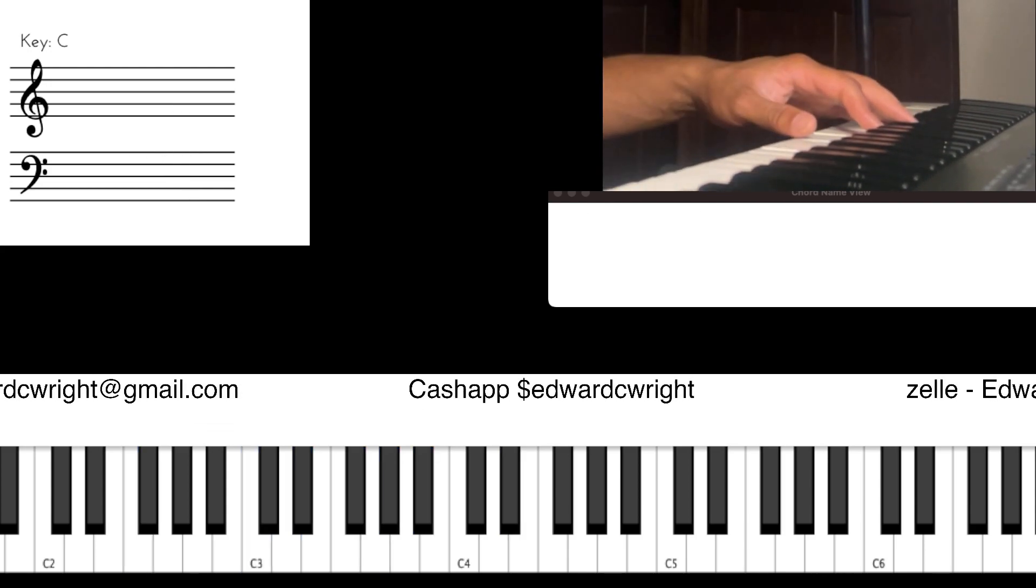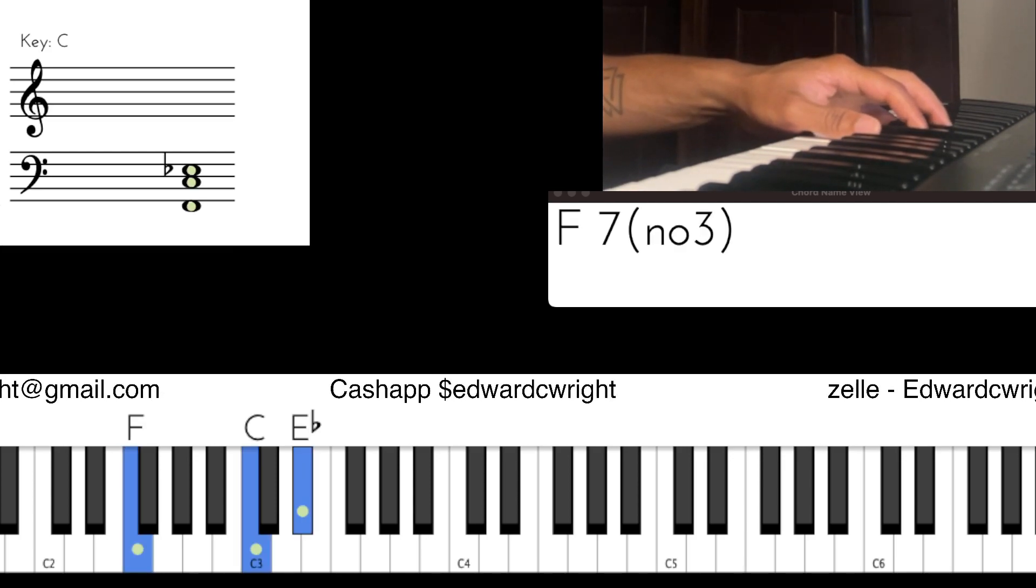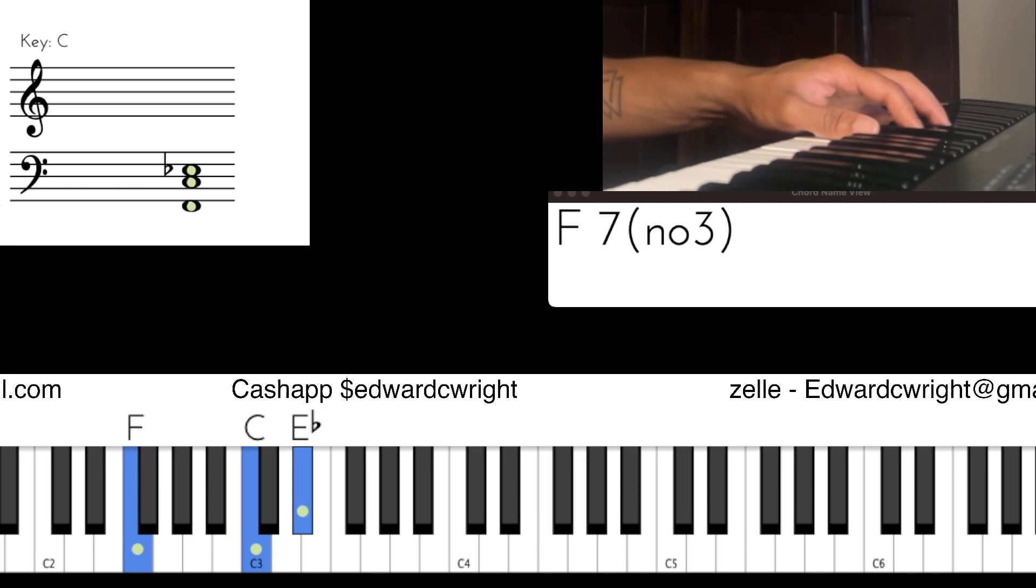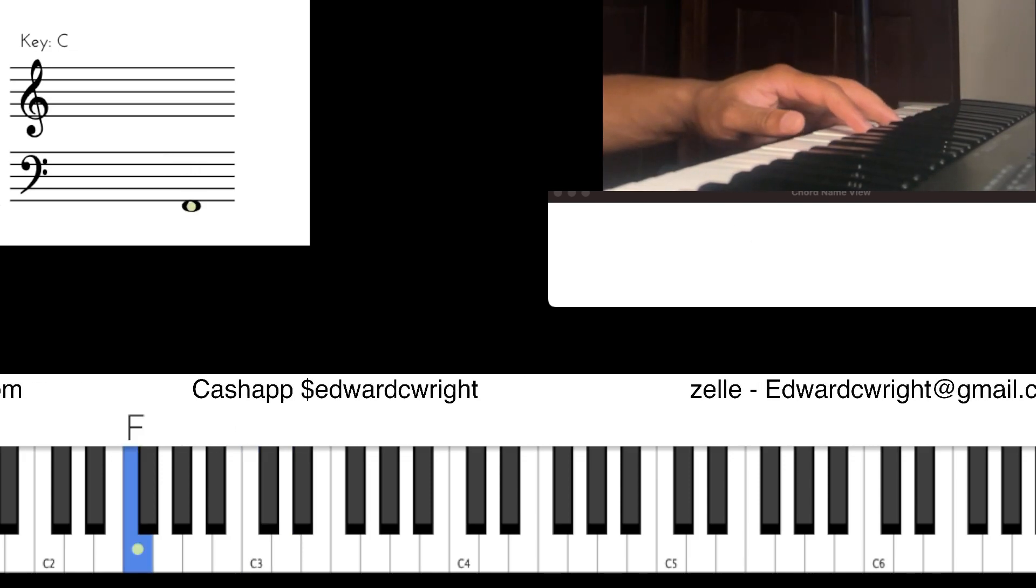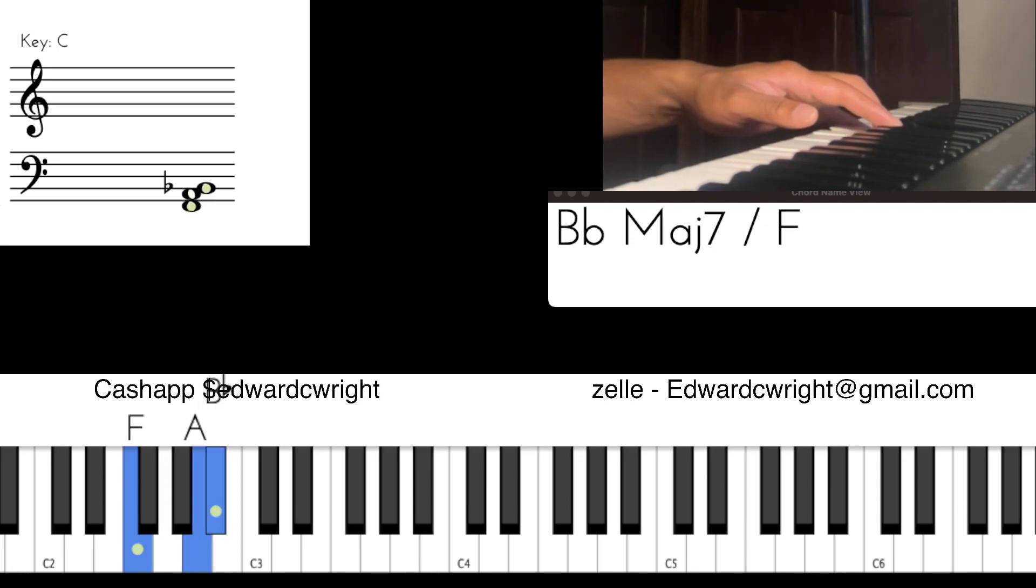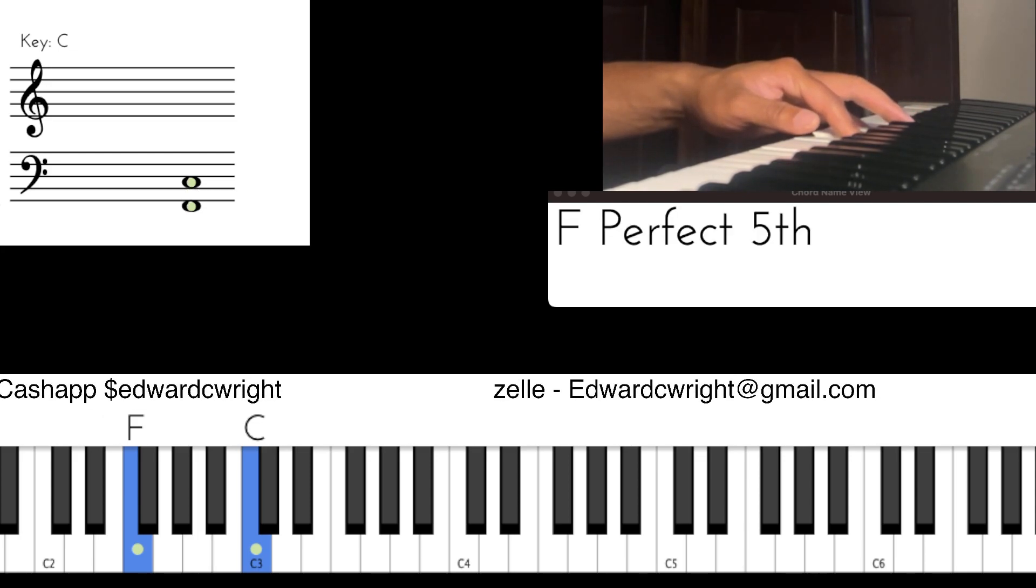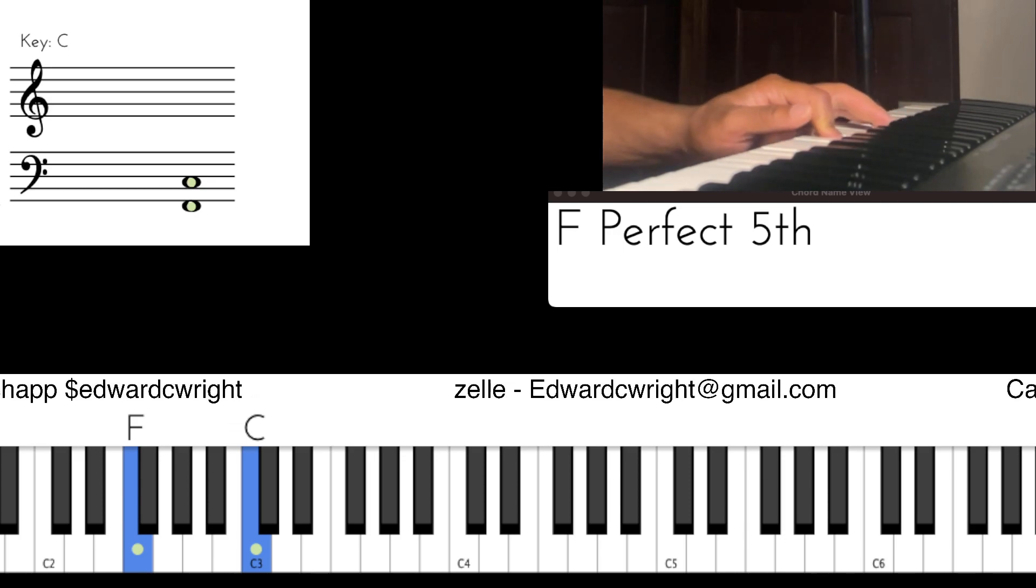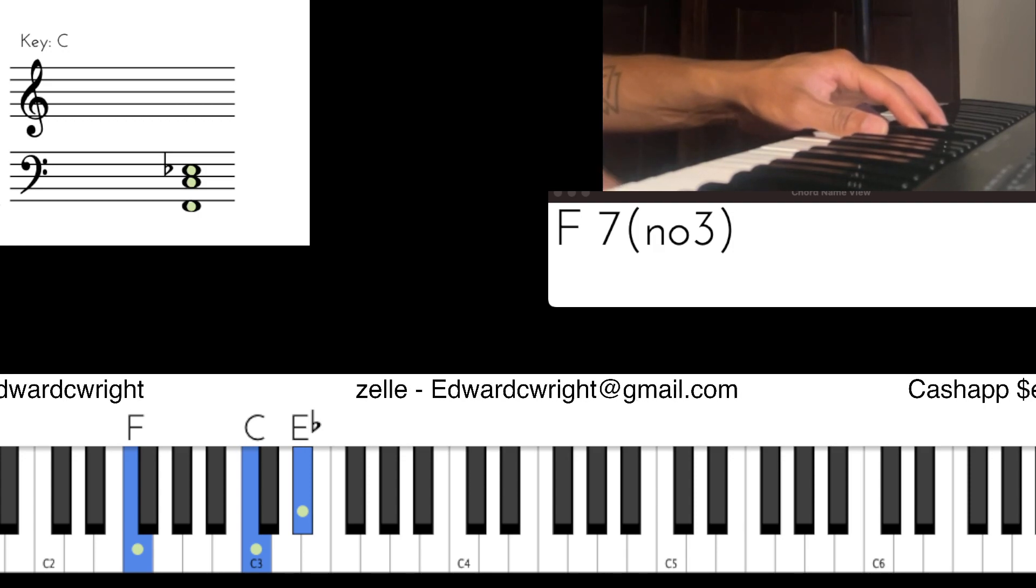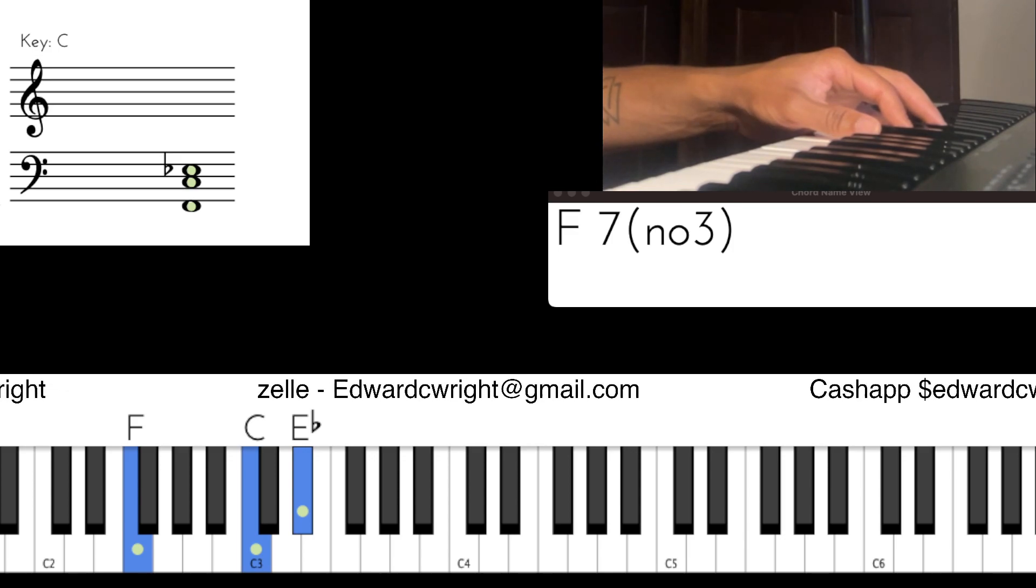Let's do it again. Left hand, we have the one, five, flat seven. F, C, E flat. Do we understand that? How we got that? Let's count it out. One, step two, step three, F, step four, step five. That's the F major chord. Take away that three, one and five. Let's keep on counting from the five, step six, step seven, flat, the seven. Now we have the F7. Okay? We have the one, five, and flat seven of F.